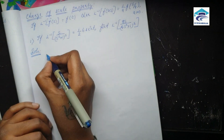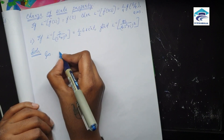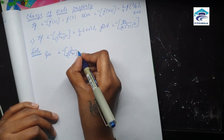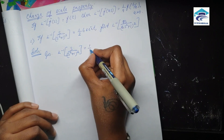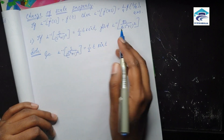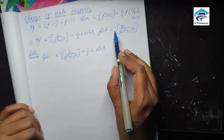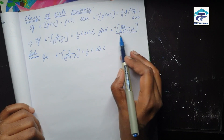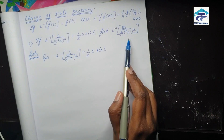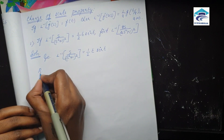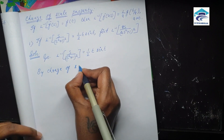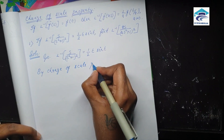It is given that L inverse of s by (s² + 1)² is equal to 1 by 2 times t sin t. We have to find L inverse of 8s by (4s² + 1)². If s by (s² + 1)² is f-bar of s, then 8s by (4s² + 1)² is of the form f-bar of as, so we can use the change of scale property.